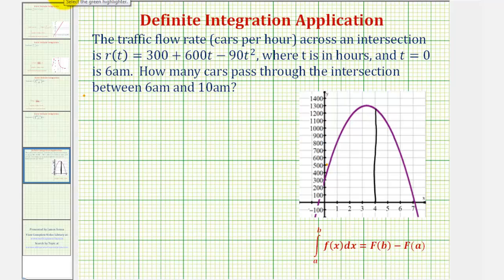The total number of cars passing through the intersection over this interval of time would be the same as the area under this function or the area of this shaded region.